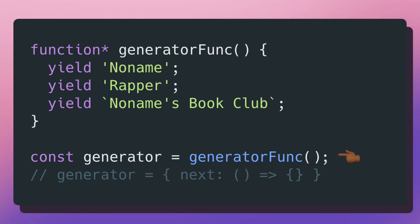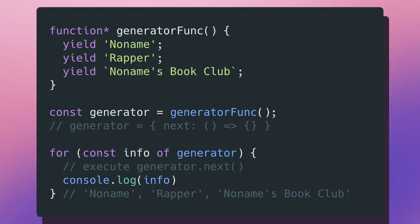Here I call the generator function and that's returning back out a generator object. Generator objects are just like iterator objects, but they implement a couple of extra methods. When you call a generator function, it doesn't execute the logic inside of it — instead, it just returns back a generator object. The logic inside will get executed when the generator's next method gets called. That triggers execution to begin, running all the logic up until the first yield statement it hits. Once it hits yield, it returns that value, exposes it to the for-of loop, and pauses execution. To continue, we wait for the for-of loop to call the generator's next method again, and this process continues until we reach the end of the generator function.